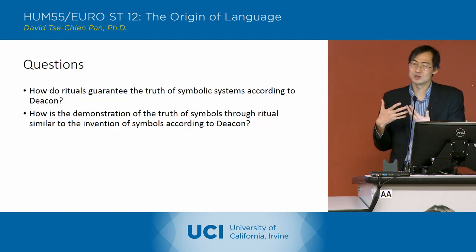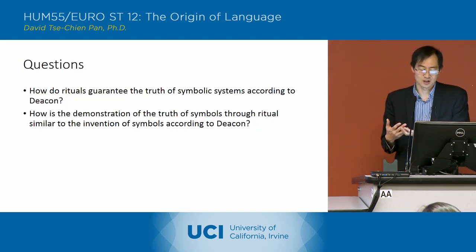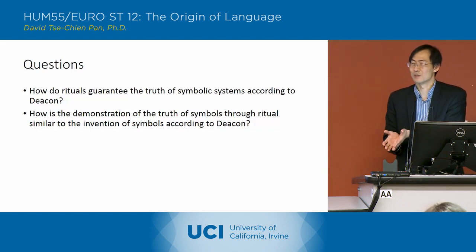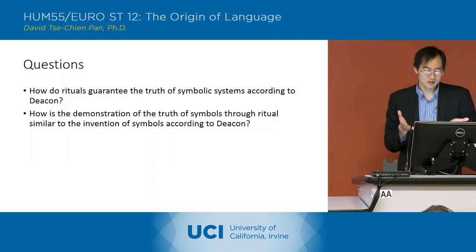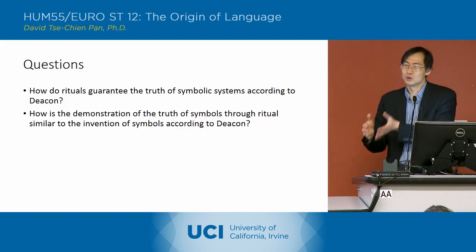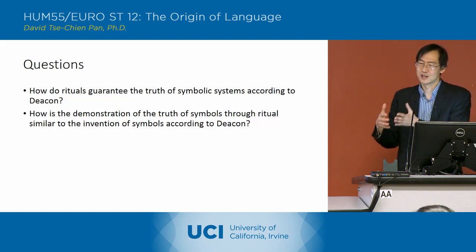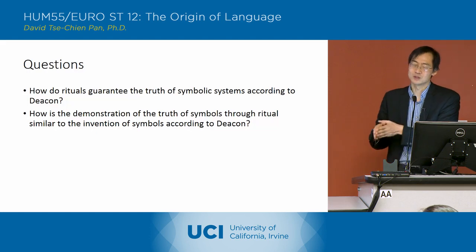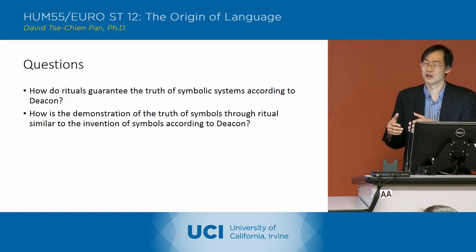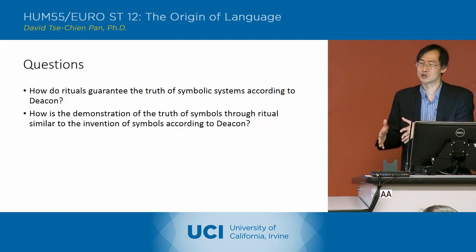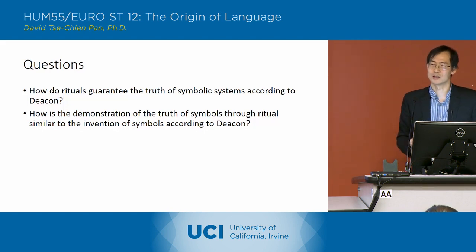Well, to establish the truth of symbols, you have to lead them back to the indexical relationships. And in inventing symbols, you have to move from those indexical relationships to the symbolic relationships, going through all the possibilities of the indexical relationships and excluding the ones you need to exclude in order to create the symbolic relationships.